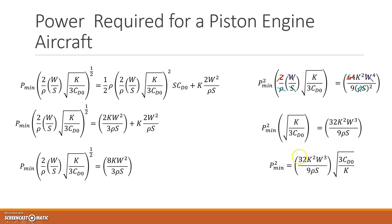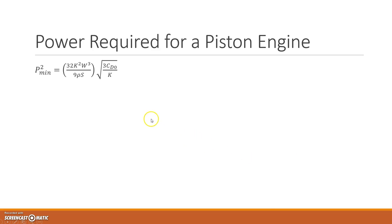So we have P min squared, so we'll just get the square root of all of that. So there's my equation. I want to get the square root of it.